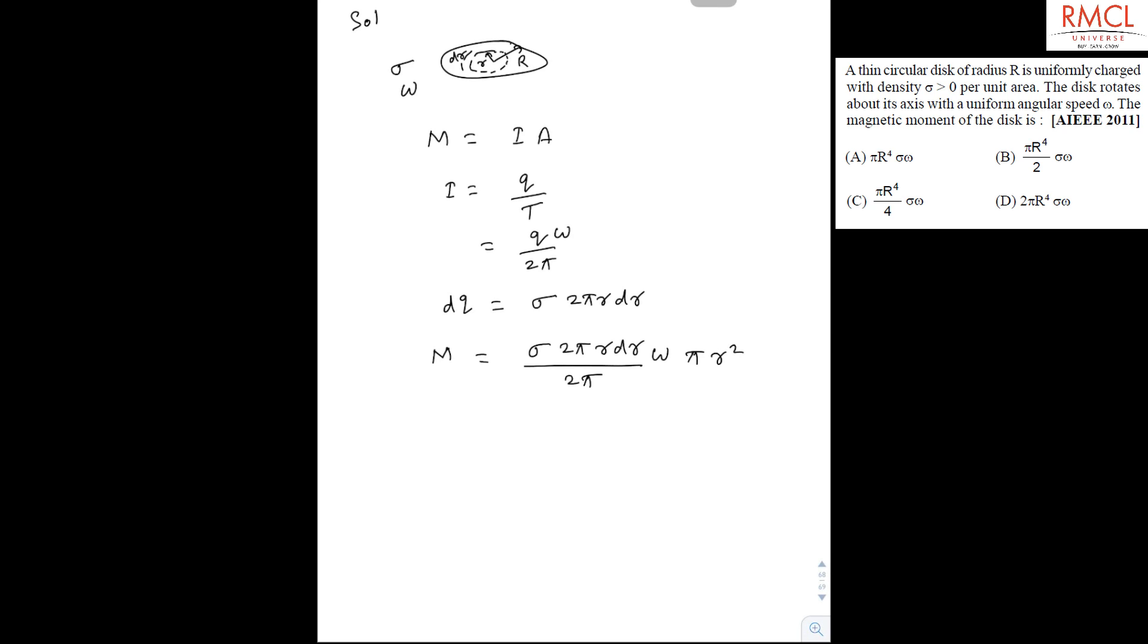So the 2π terms cancel out, and we have sigma omega πr³ dr. Now we have to integrate it from 0 to capital R.